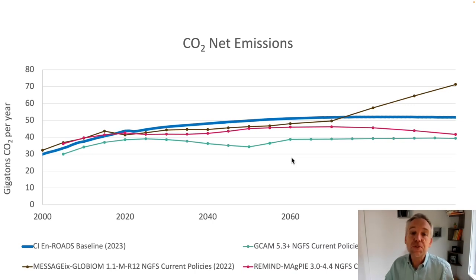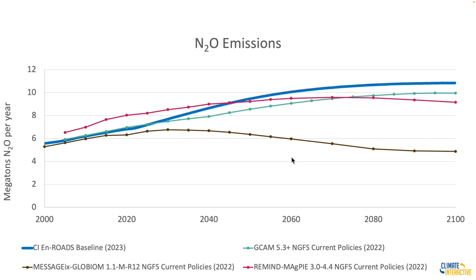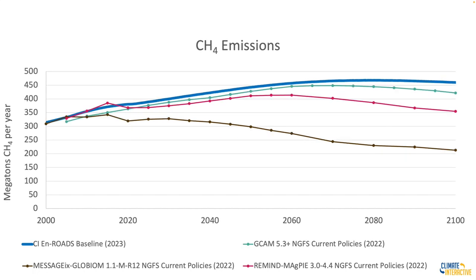First, CO2 net emissions — the results were slightly higher with the En-ROADS baseline, but the others differ from each other as well. Nitrous oxide emissions: En-ROADS is in the middle of the pack, slightly higher at the end of the century. CH4 — methane emissions — here are the results for the comparison of En-ROADS against the others.